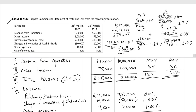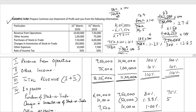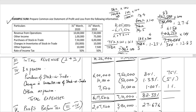Expenses for 2020: purchases of stock in trade — ₹7,50,000 divided by ₹10,00,000 multiplied by 100 equals 75%. Changes in inventories — ₹50,000 divided by ₹10,00,000 multiplied by 100 equals 5% (in brackets, as it is negative). Other expenses — ₹10,000 divided by ₹10,00,000 multiplied by 100 equals 1%. Total expenses: 75% minus 5% plus 1% equals 71%.